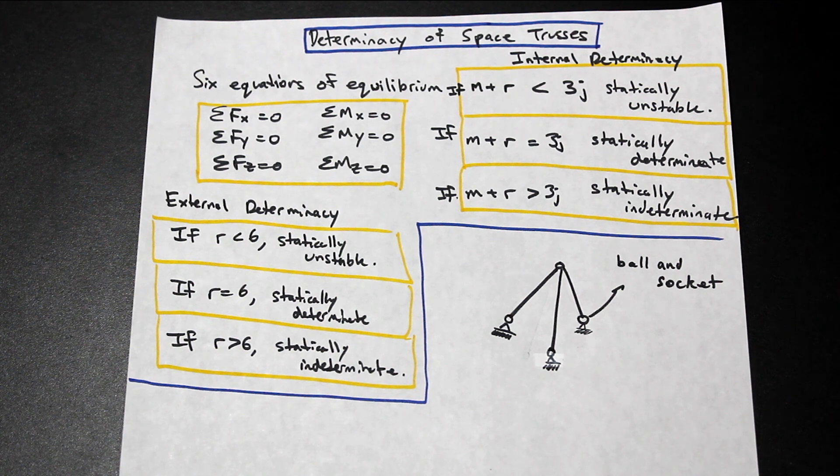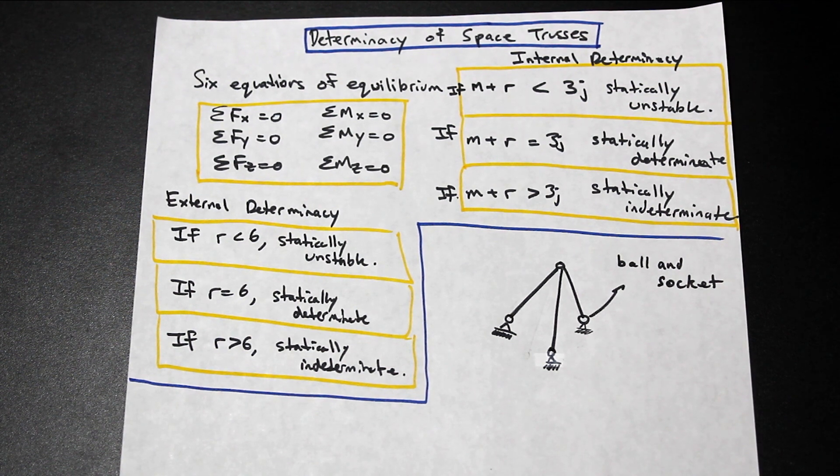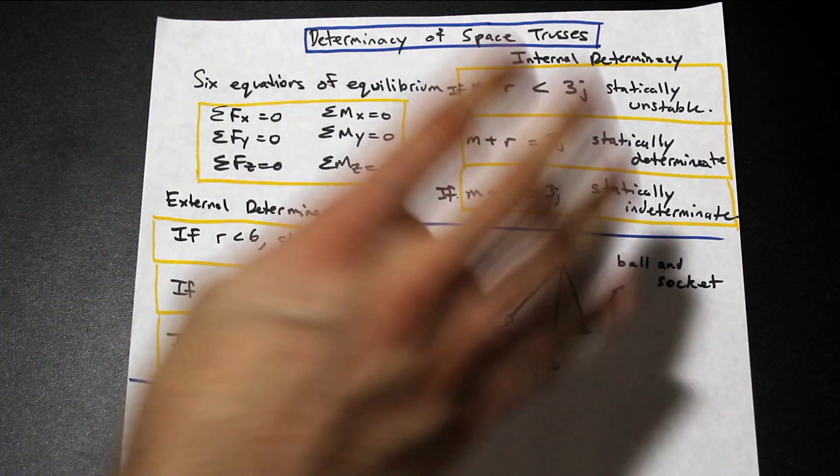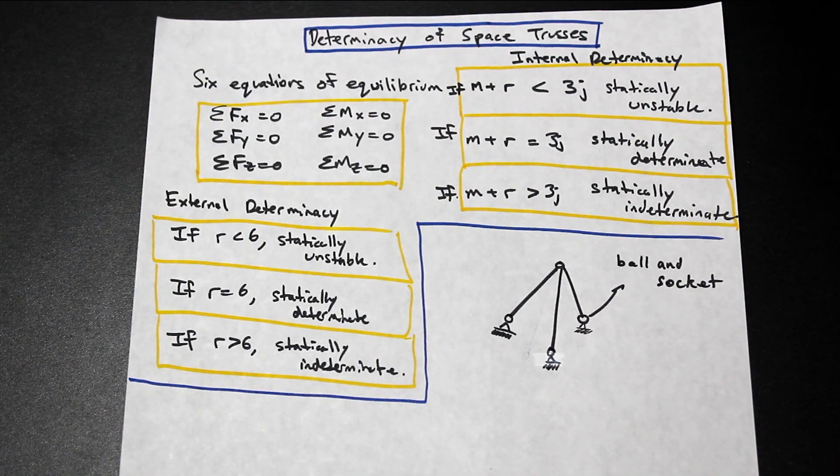So a few things change, and we're going to go over what changes compared to 2D, and I'm going to show you the rules for determinacy, and then we're going to solve a quick question. And I'm actually going to show you the different types of reactions.